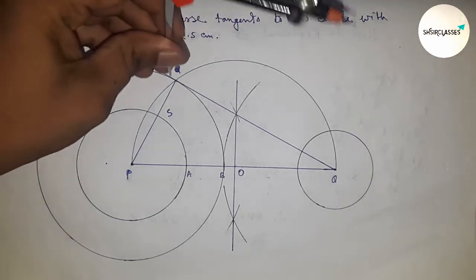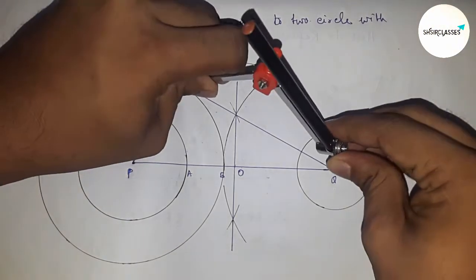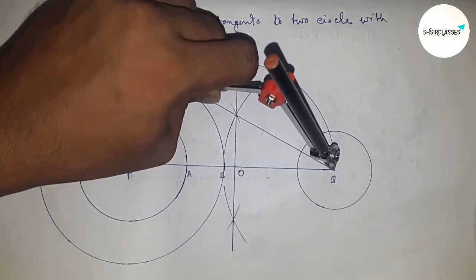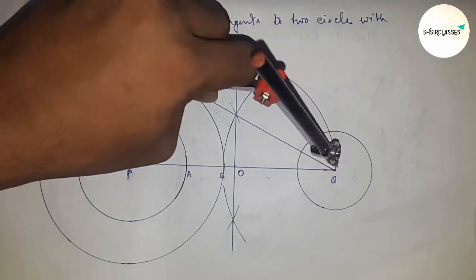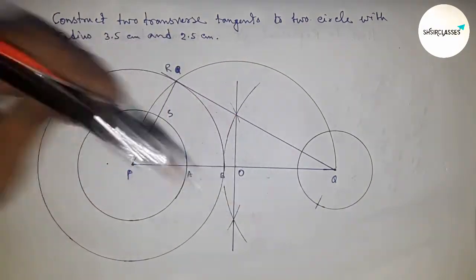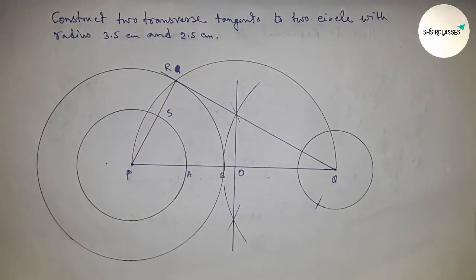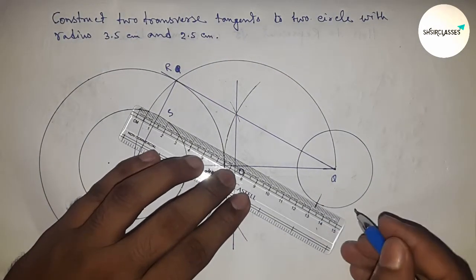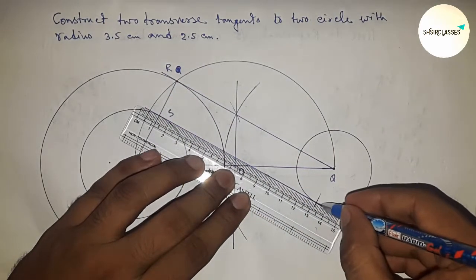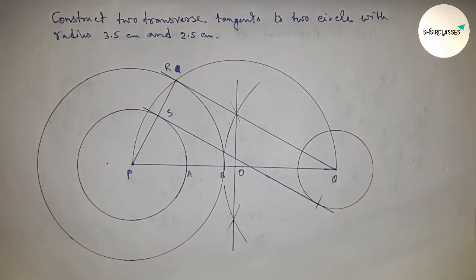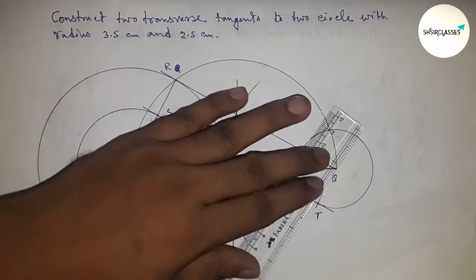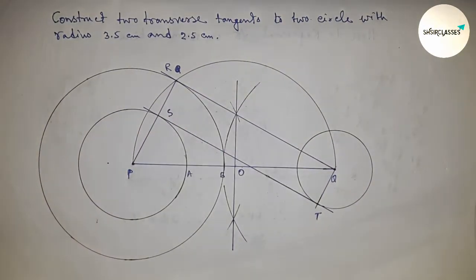Next, taking the distance RQ by compass, placing the compass on point R, and cutting the circle. Joining the points to get the transverse tangent — this intersection point is T. Joining Q to T.